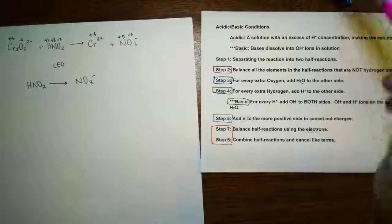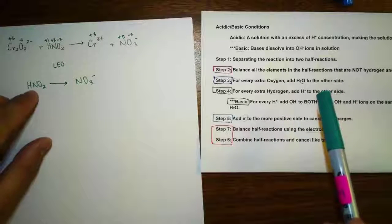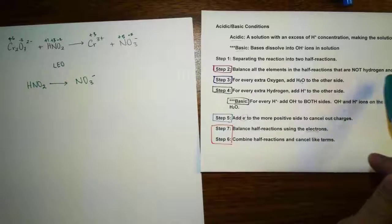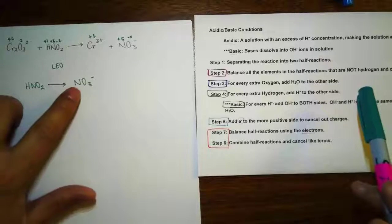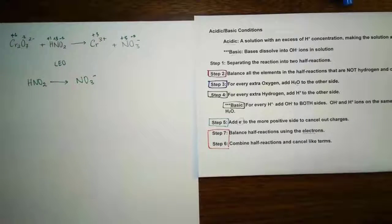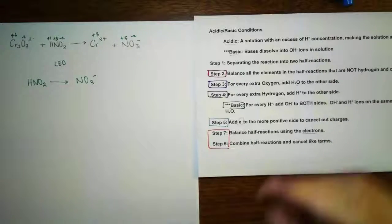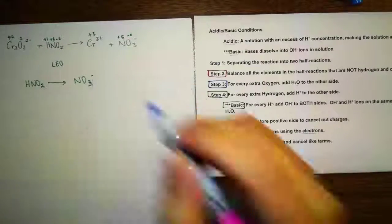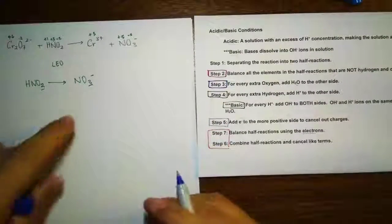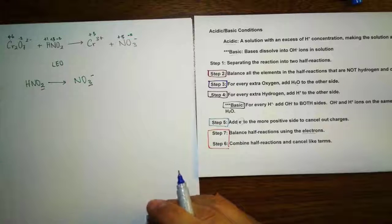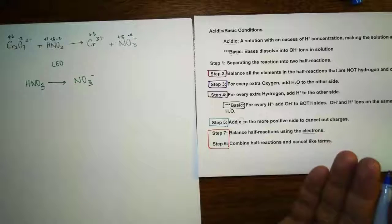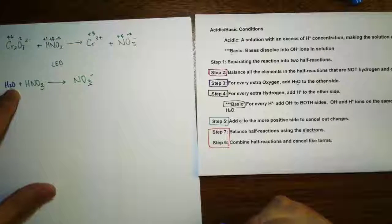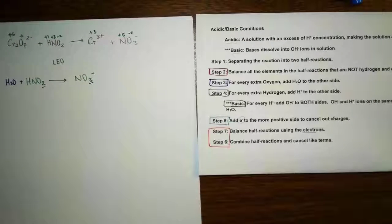Our next step is to balance all elements except hydrogen and oxygen. The N is 1 on each side — balanced. Now step 3: focus on oxygen. We have 3 oxygen on the NO₃⁻ side and 2 oxygen on the HNO₂ side. So we need one more water molecule: add 1 H₂O to the right side. Each water molecule has one oxygen, so now both sides have 3 oxygen.